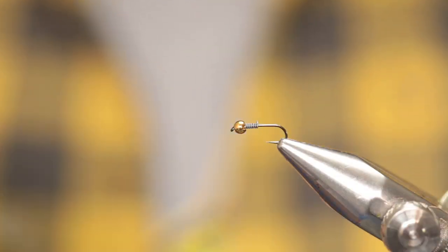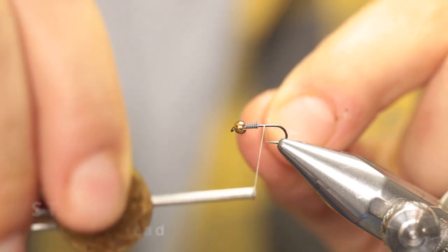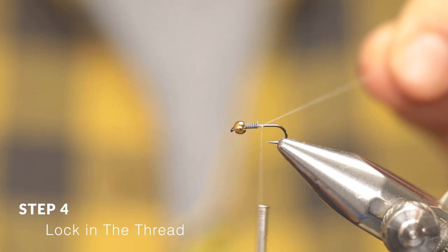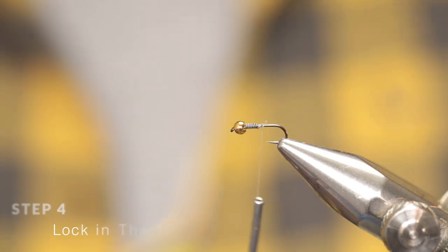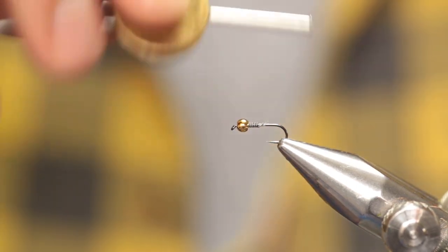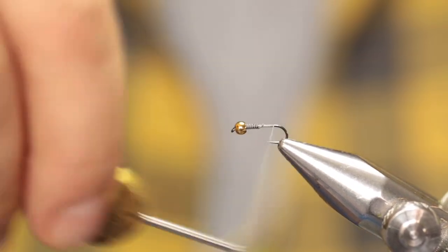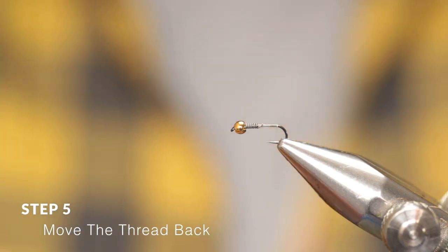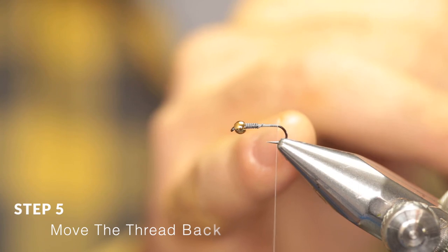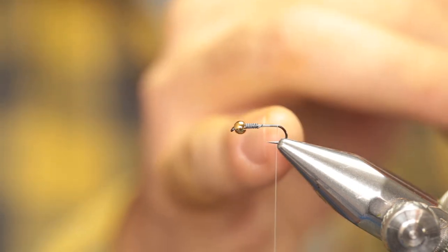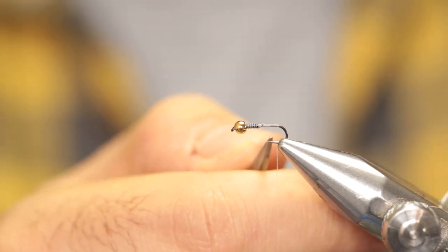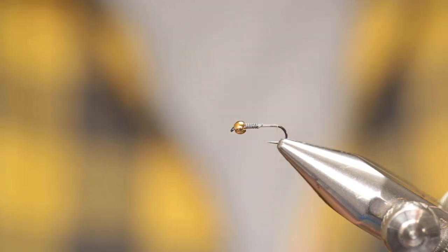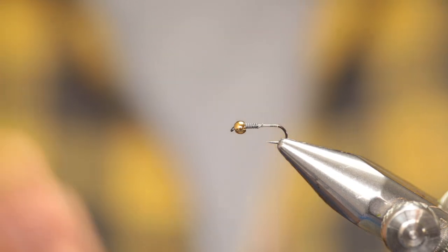Now attach your thread behind the lead wire, lock it in place, and cut off the excess. Run your thread all the way back and leave it hanging so that when you leave your bobbin hanging, the thread will intersect where the barb of the hook would be. This is a barbless hook, but use that as a reference. This will make sure you stop your fly at the right place.